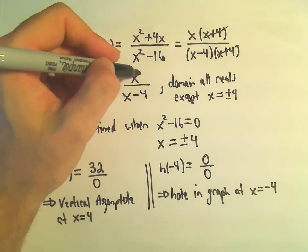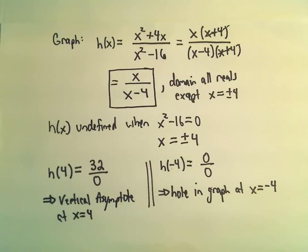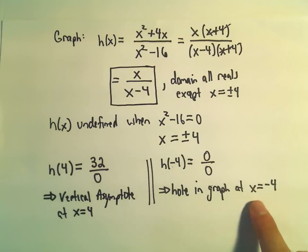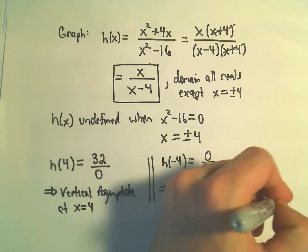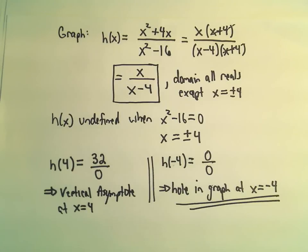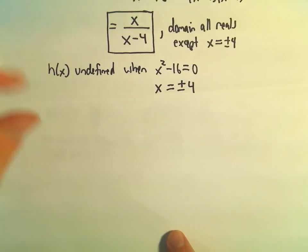So what it boils down to is I think I'm going to graph this function x over x minus 4, but I need to realize that there's a hole at this x-coordinate of negative 4. I think this is the part people forget. Other than that, if you graph x over x minus 4, you'll be in good shape.